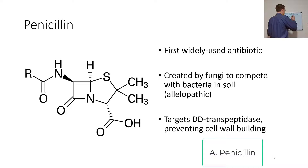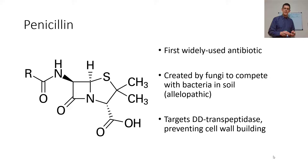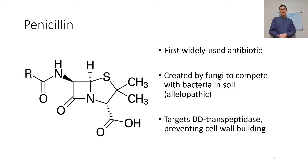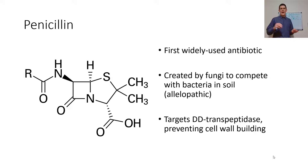Penicillin is made by fungi to compete with bacteria and was the first widely used antibiotic. It's an allelopathic compound targeting DD transpeptidase, which builds the bacterial cell wall. If penicillin targets DD transpeptidase and stops the cell wall from being built, the bacteria cannot grow and reproduce — and bacteria that can't reproduce tend to die.